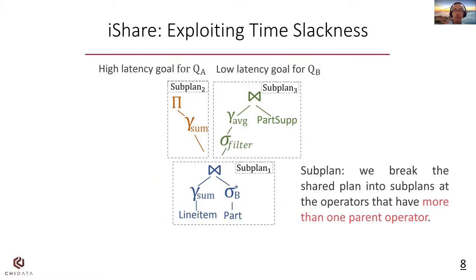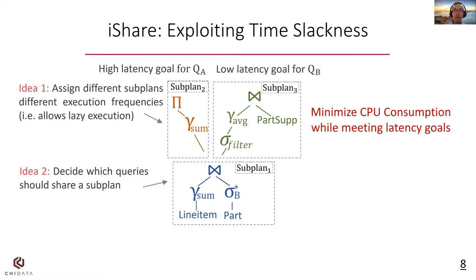The root problem is that existing approaches do not exploit the time slackness across diverse latency goals. We propose iShare to exploit the time slackness. It breaks the shared plan into subplans, assigns different subplans different execution frequencies, and decides which queries should share each subplan.